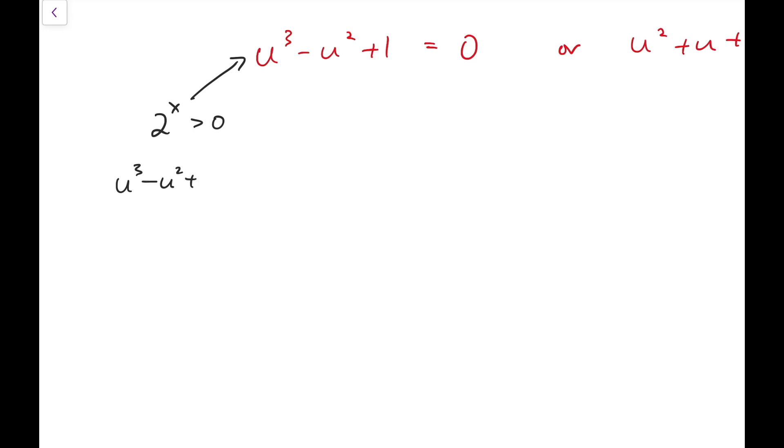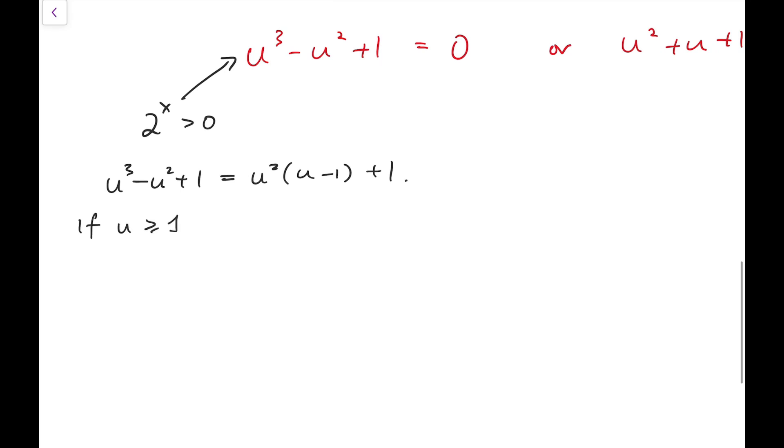Now, u cubed minus u squared plus 1 is equal to u squared times u minus 1 plus 1. If u is at least 1, then of course this is always at least 1. So that's positive.